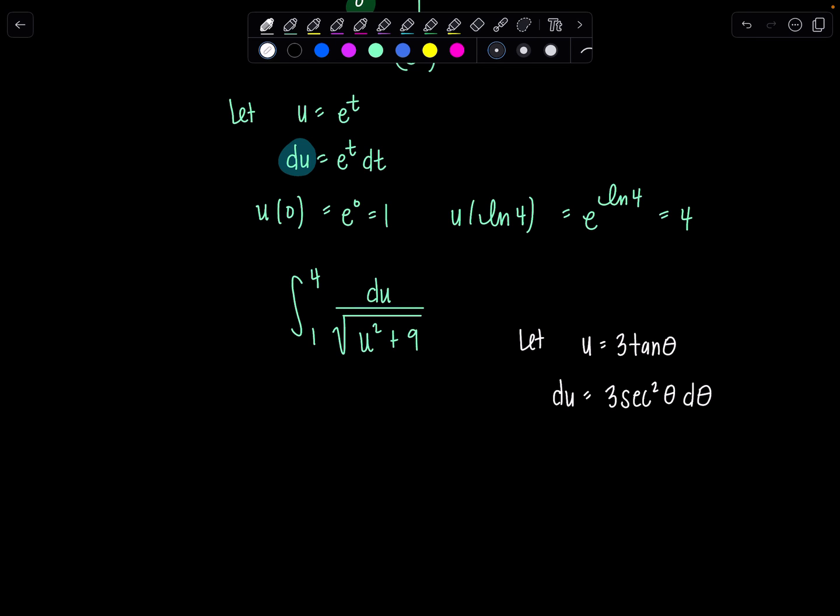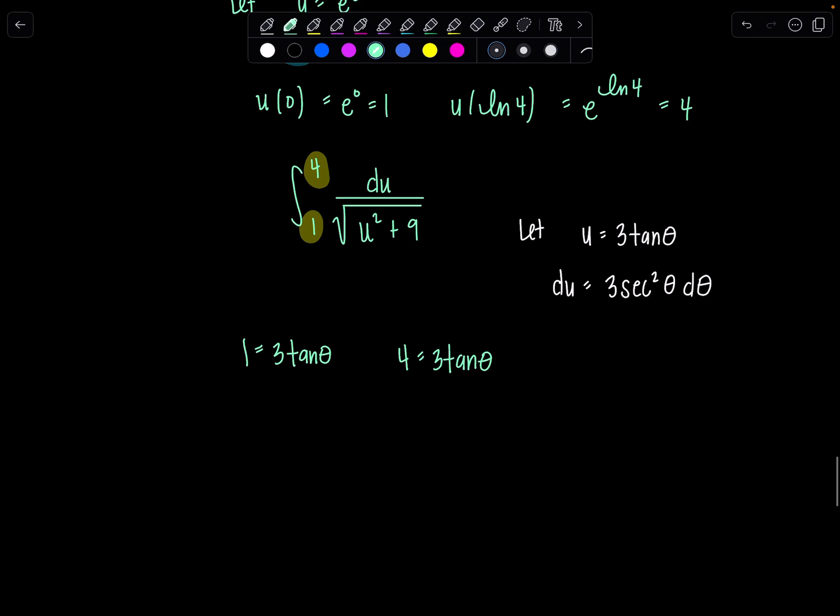And then again, I need to switch my limits of integration. These limits 1 and 4 belong to the variable u. So I'm going to substitute them in for u and solve for theta. This is different than when we use sub. We don't substitute them in, I set it equal to that number. So 1 equals 3 tan theta for the lower limit, and then 4 equals 3 tan theta. That means 1 third is tangent theta. That's a little awkward because this is not a value from our unit circle. So this first lower limit of integration is tan inverse of 1 third. And then similarly over here, 4 thirds is tan theta. 4 thirds is not a value that we know right off from our unit circle. So upper limit of integration is tan inverse of 4 thirds.